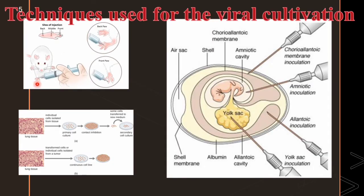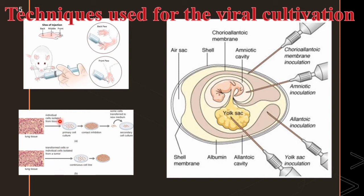The techniques used for viral cultivation are shown here. The first picture shows a live animal being used for viral cultivation, which is now used only in a few areas or countries. The second technique uses a live embryonated chick egg, and the third uses cell culture, specifically a primary or secondary cell line.